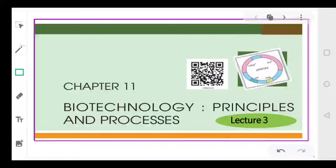Good morning dear students, this is your teacher Neela Melawat and we are doing chapter 11, that is biotechnology: the principles and the various processes. In the previous video we talked about the two processes. Initially we require three things for recombinant DNA technology to process: first was the restriction enzymes, second is the cloning vectors, and third is the competent host.